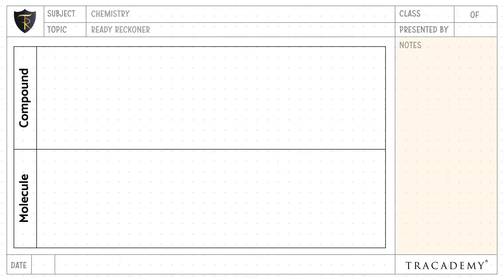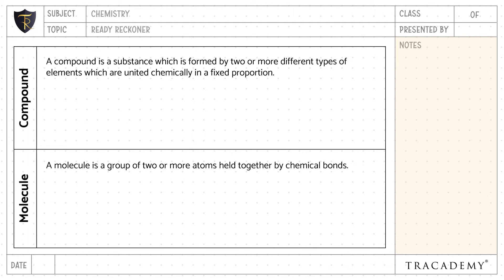A compound is a substance which is formed by two or more different types of elements which are united chemically in a fixed proportion. A molecule is a group of two or more atoms held together by chemical bonds.